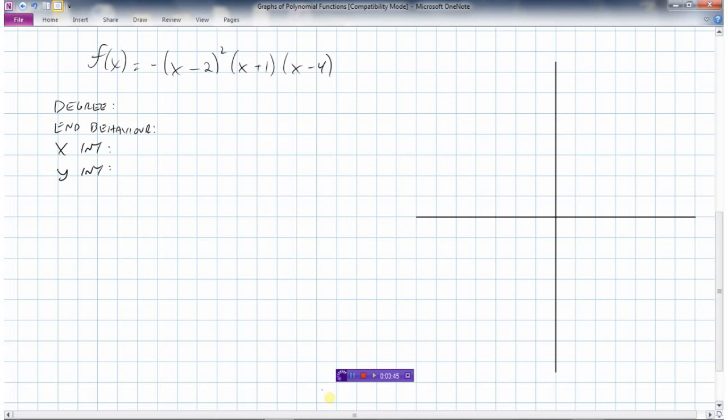So let's take a look at this function here. We have f of x equals negative x minus 2 squared, x plus 1, x minus 4. And when it's in factored form like this we can tell a lot of information from the graph. It still won't be perfect, but we can do a pretty quick and good sketch with this information.